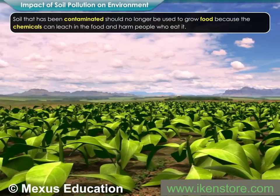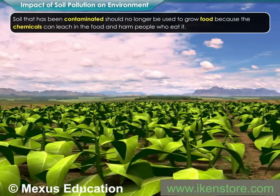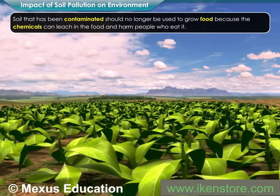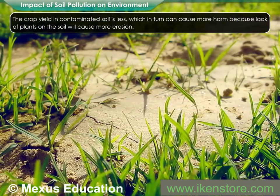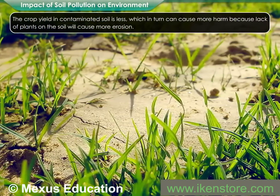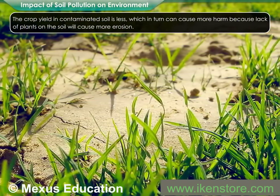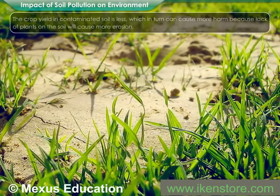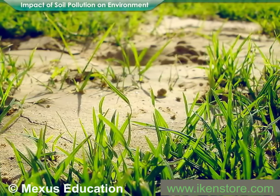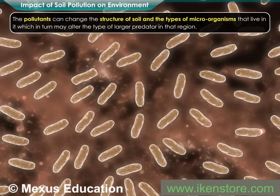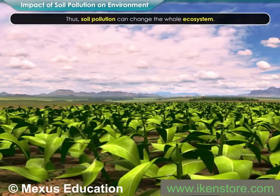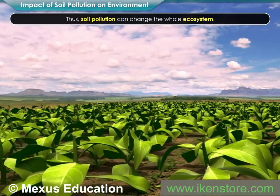Soil that has been contaminated should no longer be used to grow food because the chemicals can leach into the food and harm people who eat it. The crop yield in contaminated soil is less, which in turn can cause more harm because lack of plants on the soil will cause more erosion. In addition, the pollutants can change the structure of soil and the types of microorganisms that live in it, which in turn may alter the type of larger predators in that region. Thus, soil pollution can change the whole ecosystem.